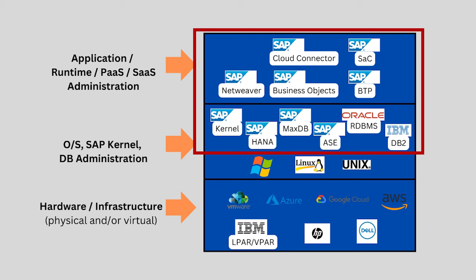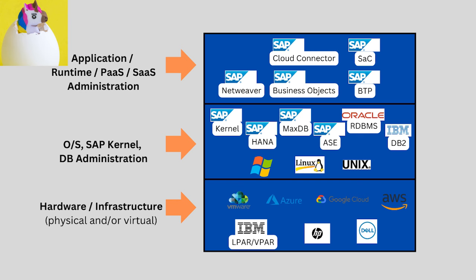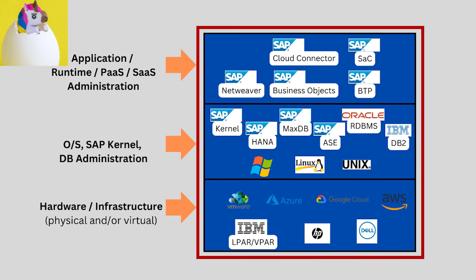By breaking up the SAP Basis role into smaller parts, recruitment of unicorns can be avoided at the expense of extra human administration, also known as HR. In my experience though, most companies are SMEs and the SAP Basis administrator has to be multi-disciplined across all of these technical areas.